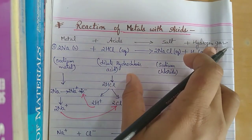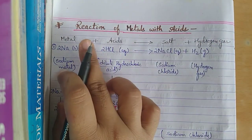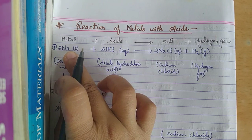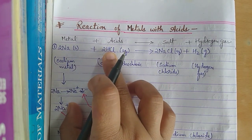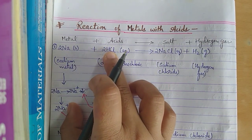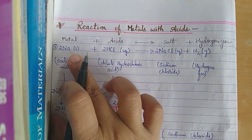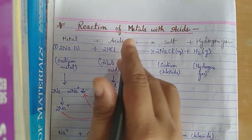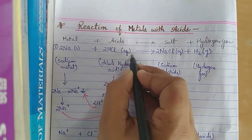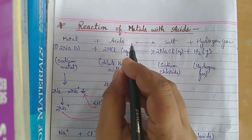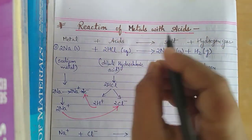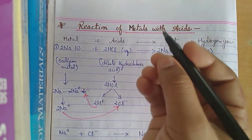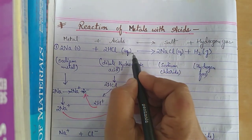Here I have taken the example of sodium metal reacting with HCl — hydrochloric acid. When sodium metal is added to hydrochloric acid, 'aq' here means aqueous — when any acid or salt is dissolved in water, it is called aqueous.